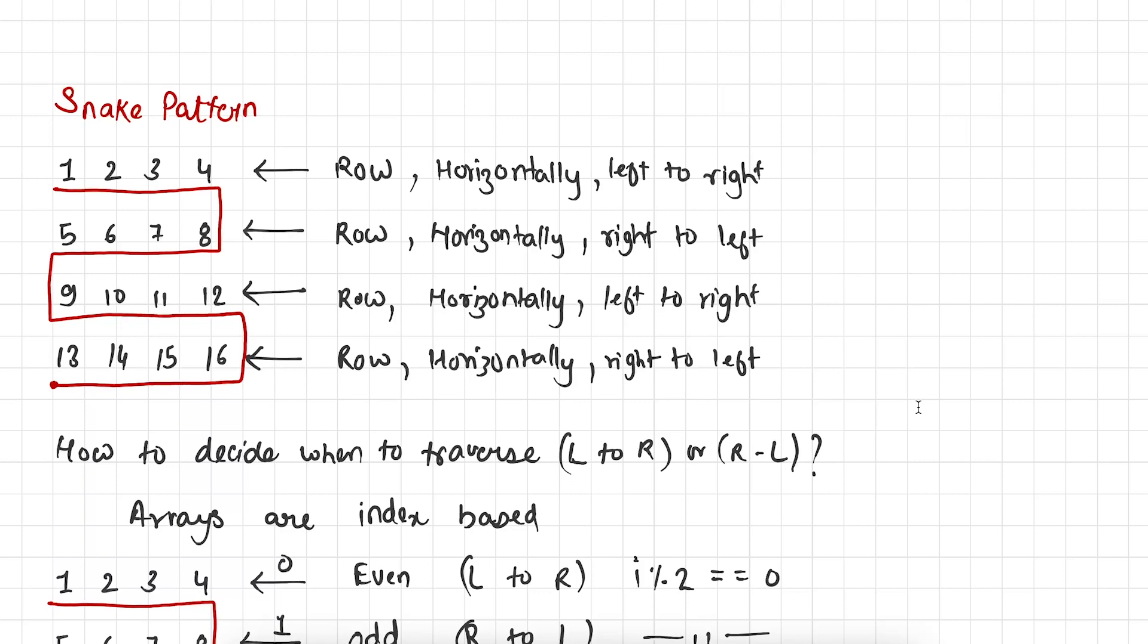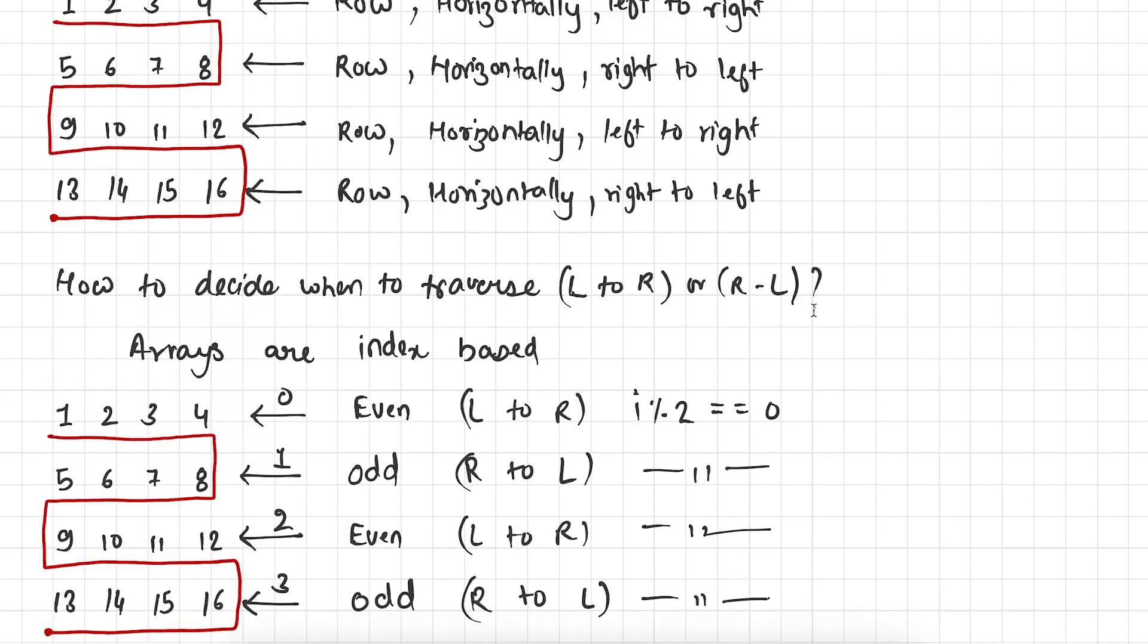In case of snake pattern if we consider first row then you can see that we are traversing first row horizontally from left to right. And second row horizontally from right to left and third row horizontally left to right and fourth row horizontally right to left. This is the snake pattern. Now this begs the question: how to determine when to traverse from left to right and when to traverse from right to left.